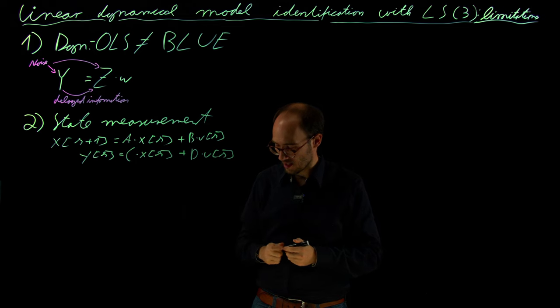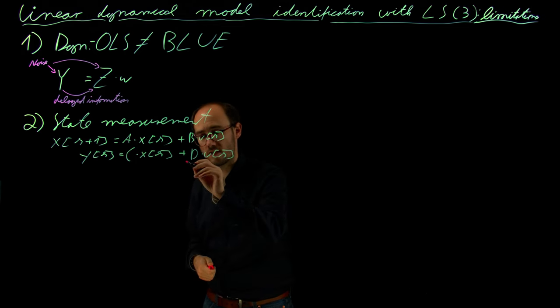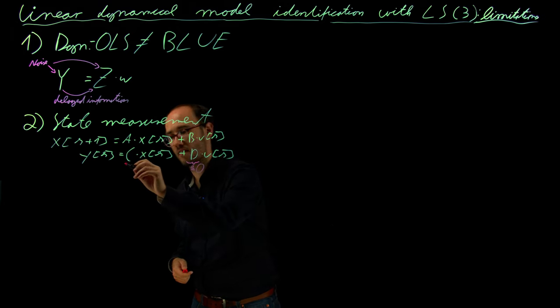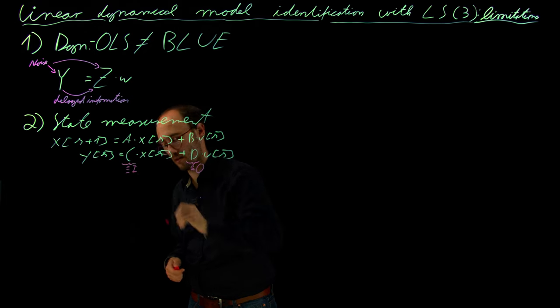We had assumed so far that D was basically the zero matrix and that C was the identity matrix.